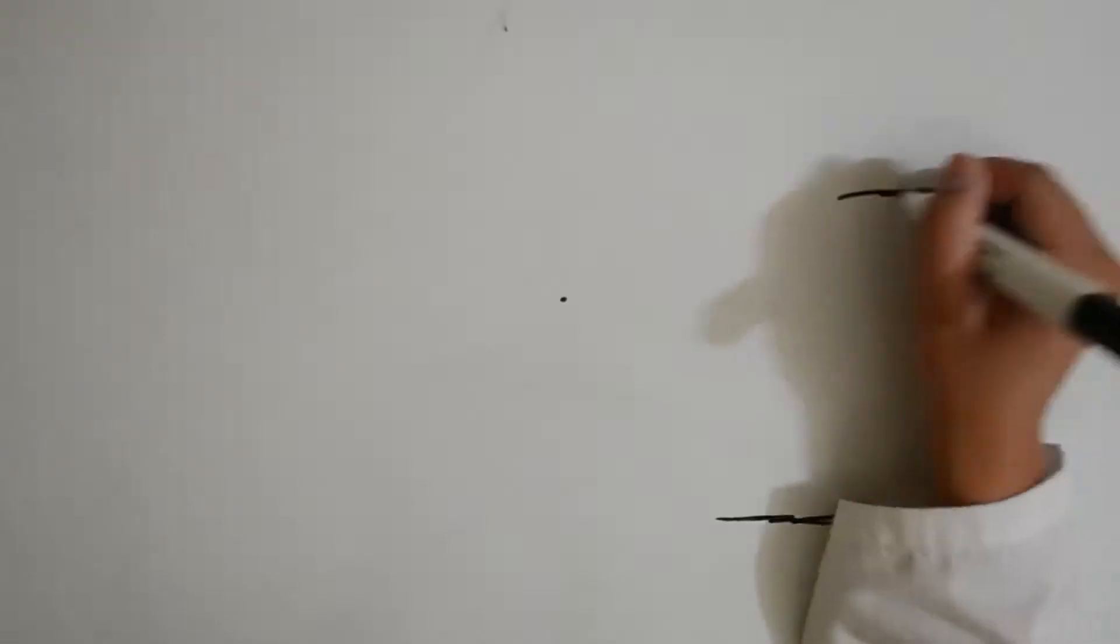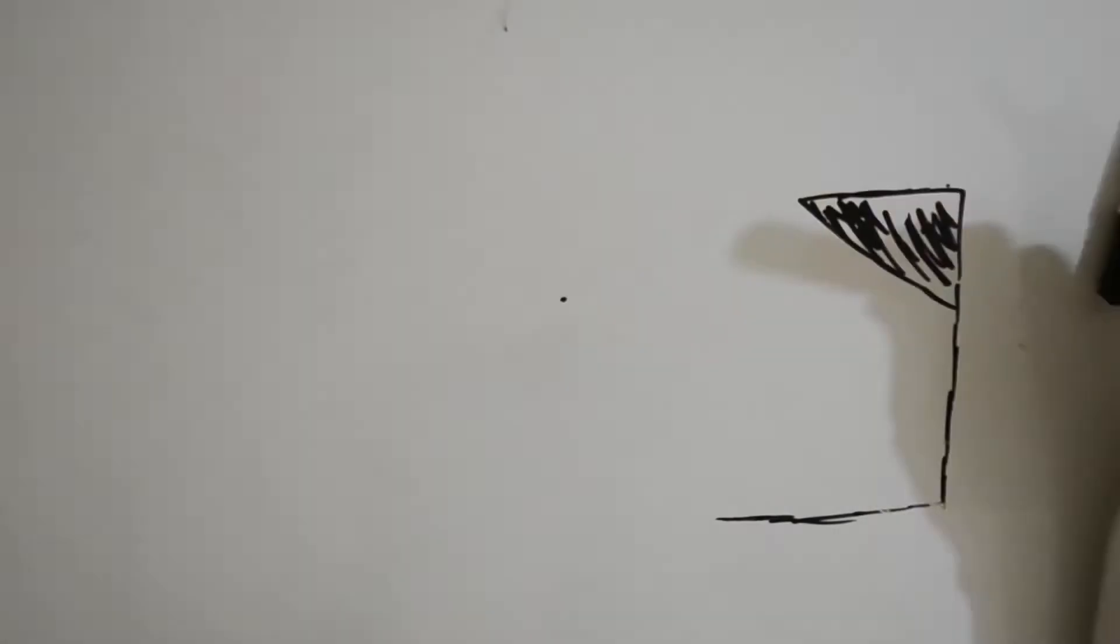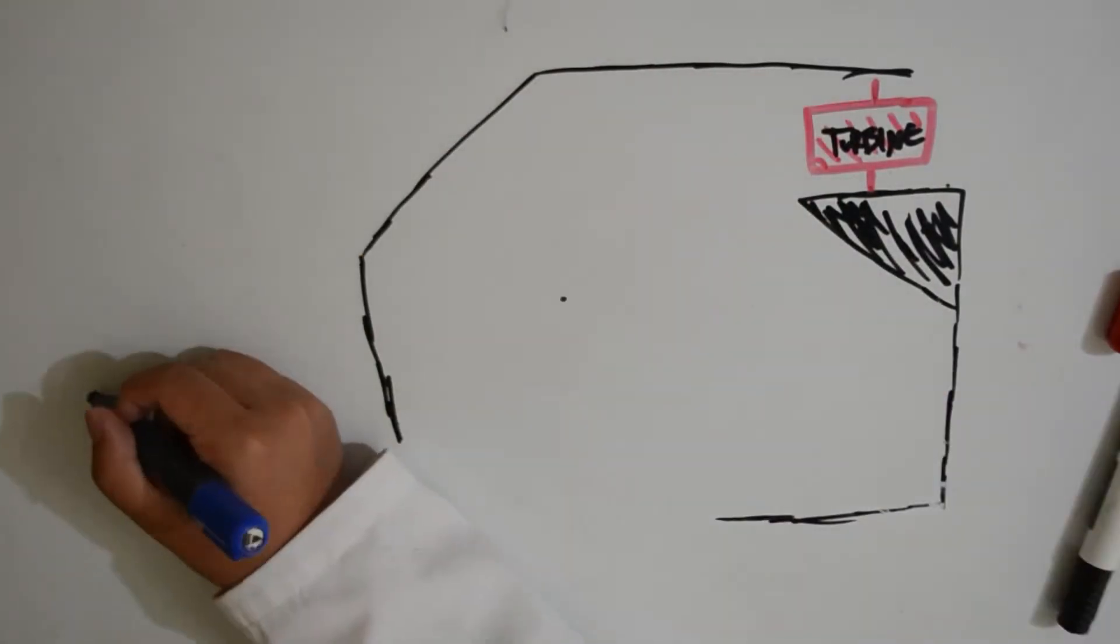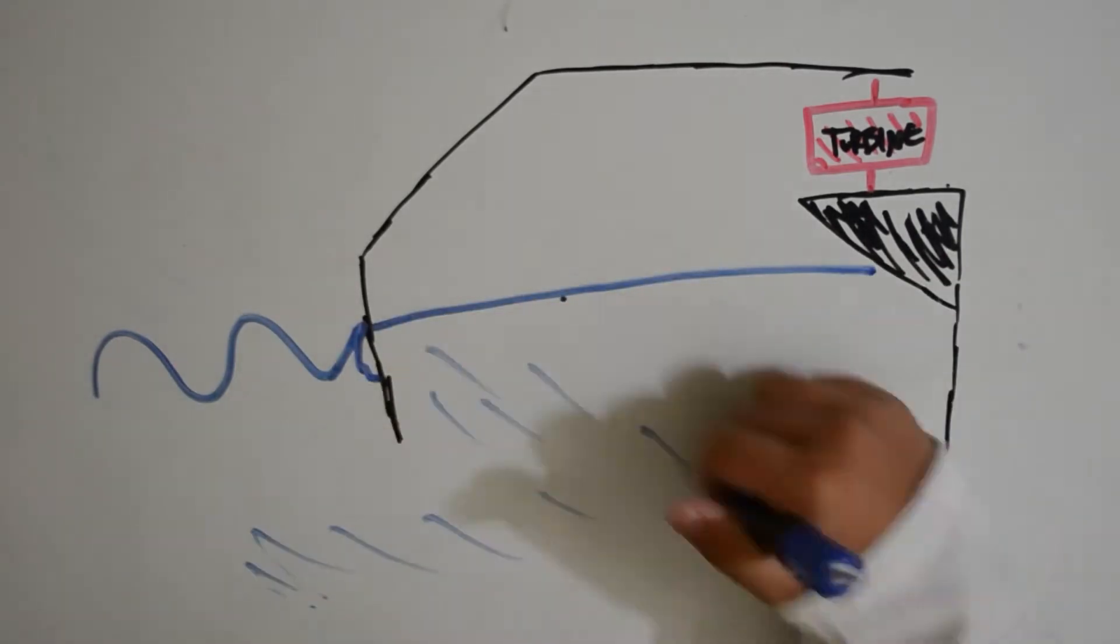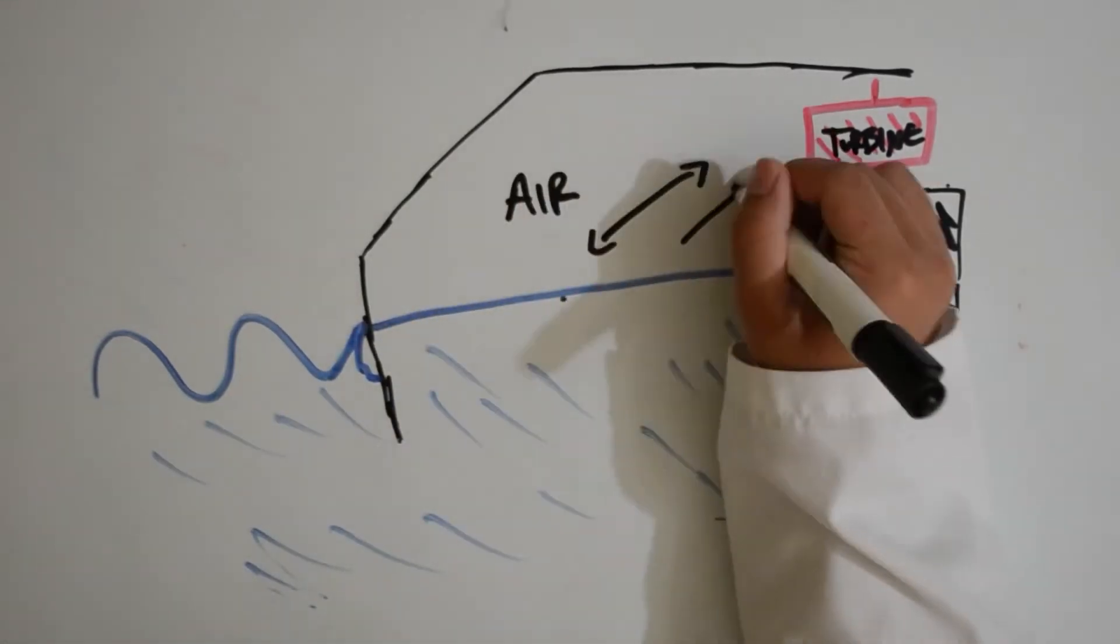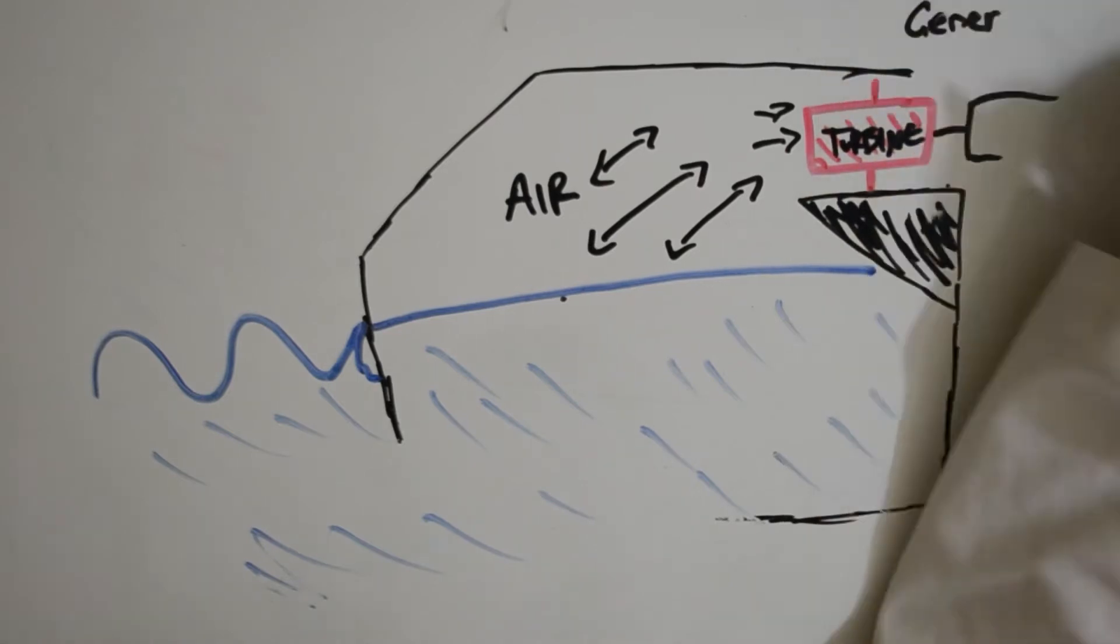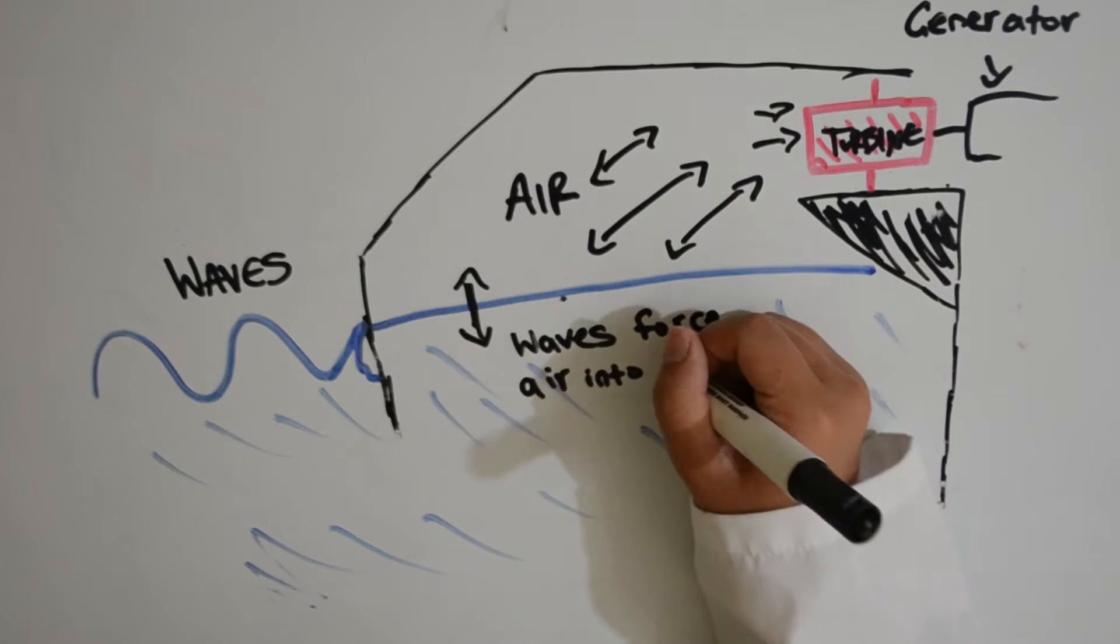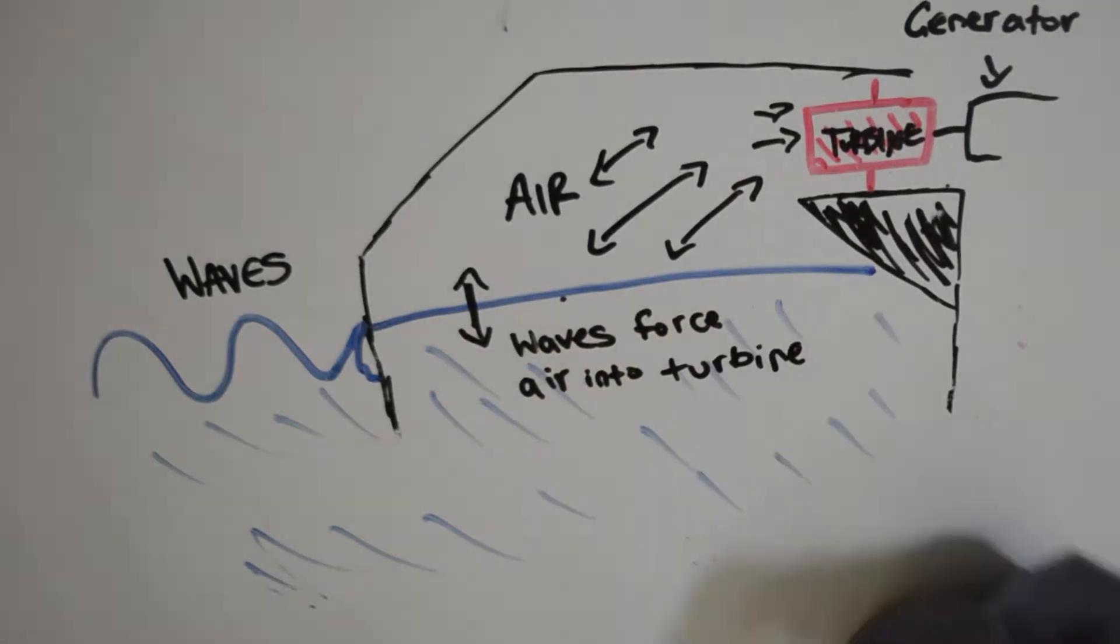Wave power stations work by placing a structure near a body of water with a water chamber and a turbine. The waves cause the water level to rise and fall in the chamber, and a turbine which turns a generator is placed in a hole where the resulting air from the waves escapes. The force generated by the movement of the waves cause air to push out through the turbine, and thus, wave energy is harnessed.